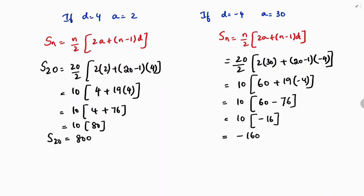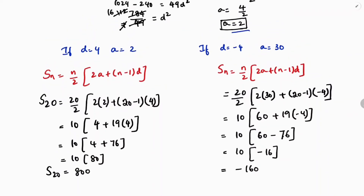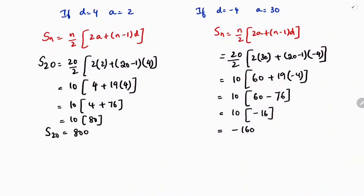So we have two cases. If d = +4 and a = 2, then the sum of 20 terms is 800. If d = −4 and a = 30, then the sum of 20 terms is −160. Both sums of 20 terms are different for different values of the common difference in this problem.